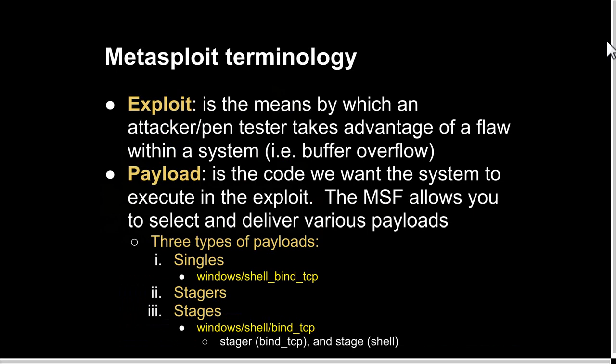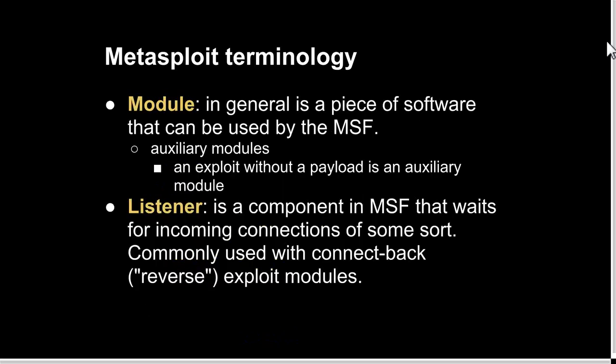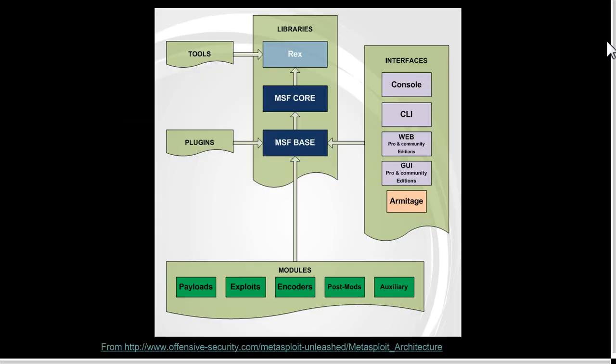Going into Metasploit terminology: exploits refer to the means by which an attacker or pen tester takes advantage of a flaw within a system. A payload is the code that the pen tester or attacker wants the system to execute in the exploit. There are three types of payloads: singles, stagers, and stages. Other key components are modules — a piece of software that can be used by the Metasploit framework — and listeners, which handle connect-back or reverse exploit connections.